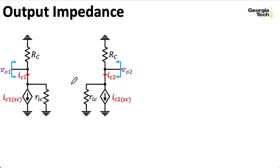So the output impedance is just going to be RC in parallel with RIC. So that's simple enough.